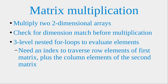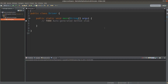The key idea is like this: we need an index to traverse the row elements of the first matrix together with the column elements of the second matrix, in order to complete the multiplication process of the elements inside the two matrices. Now we go to the implementation.